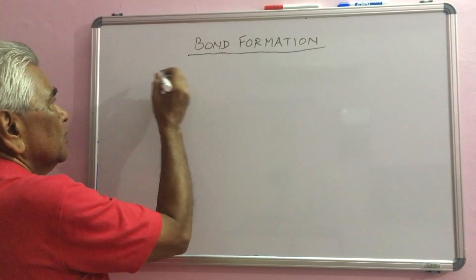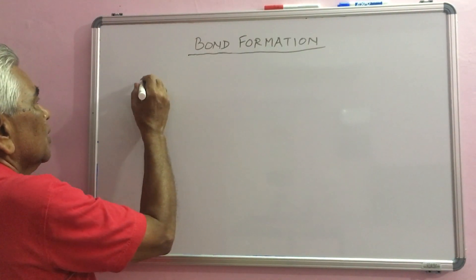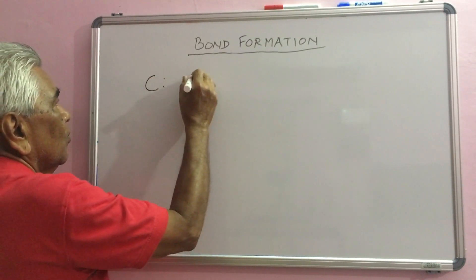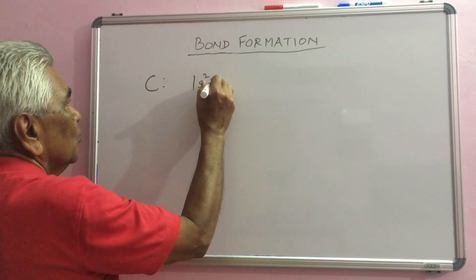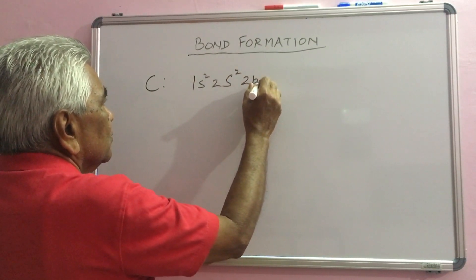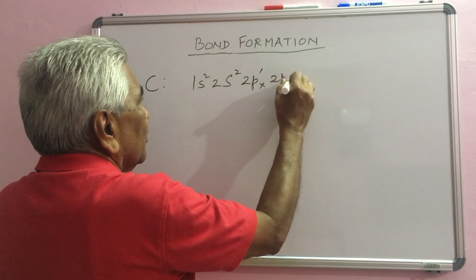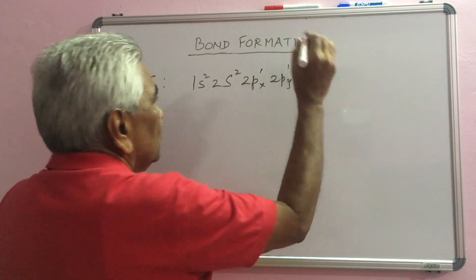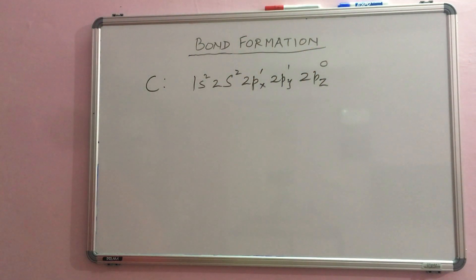You have seen in earlier lecture that carbon atom has configuration 1s2, 2s2, 2px1, 2py1, 2pz1, 2pz0, no electron in this.